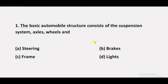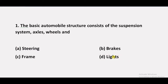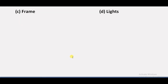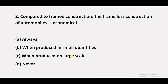Question 1: The basic automobile structure consists of the suspension system, axles, wheels, and — option A: steering, option B: brakes, option C: frame, option D: lights. The answer is C. The basic automobile structure consists of the suspension system, axles, wheels, and frame.